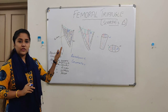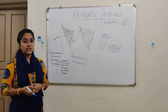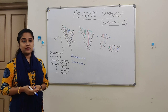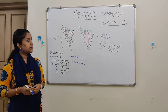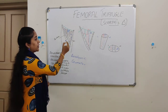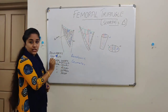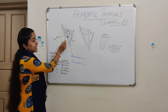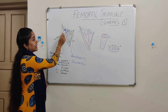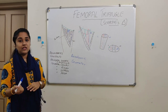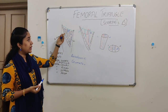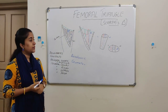The roof is formed by the superficial fascia and the deep fascia. The deep fascia of the thigh is referred to as fascia lata. The floor is formed by four muscles. From medial to lateral, it is adductor longus, then pectineus, then psoas major, and then iliacus.